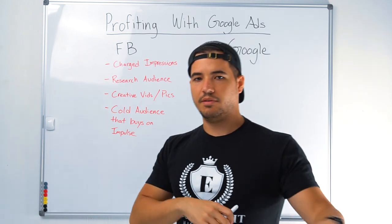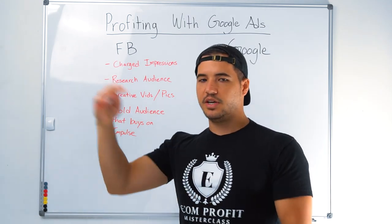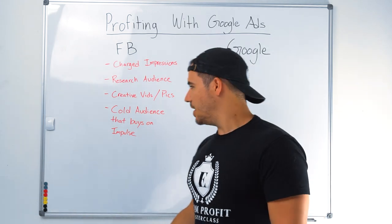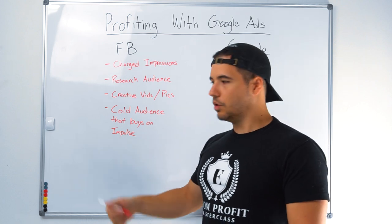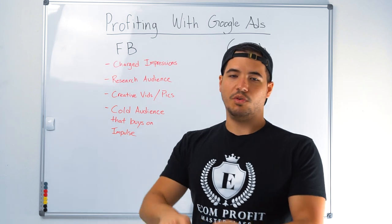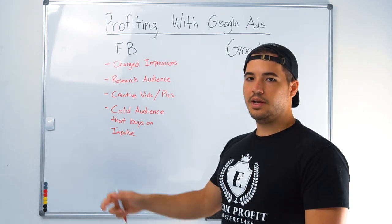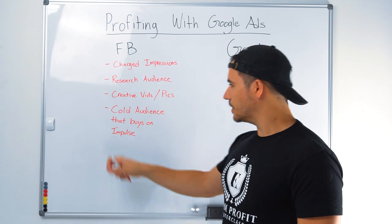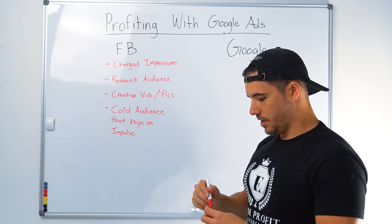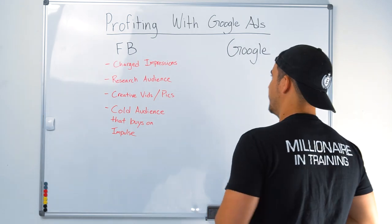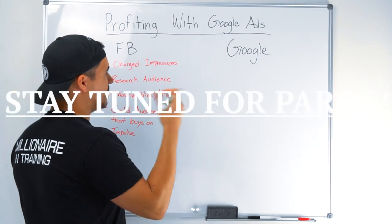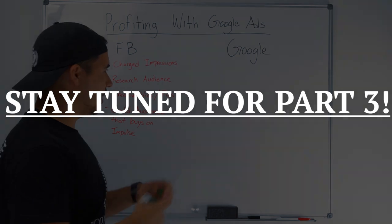They've never heard about the product — they see it on a video and they're like, wow, that looks really cool, I'm going to buy that. They're not on Facebook looking to buy products. They're on Facebook seeing funny videos, looking at what their friends and family are doing. Then they get hit with an ad and they're buying on impulse, if they buy at all. Now we're going to talk about Google and why I think Google is so much better — for beginners especially — in a lot of ways.